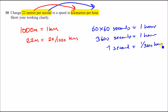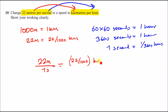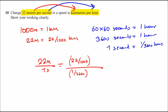Putting it together: 22 meters per second equals (22/1000) kilometers per (1/3600) hours. Entering this as a fraction in the calculator gives a final answer of 79.2 kilometers per hour.